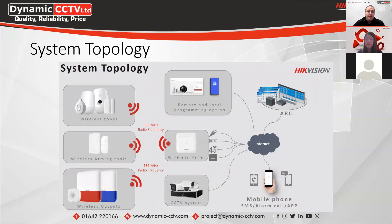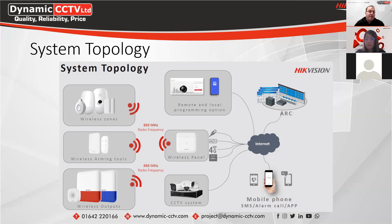As a general overview of the topology with the AX Pro system, you've got your wireless sensors — whether it be door contacts, panic alarms, or PIR sensors. Those all link back to the main hub using radio frequencies, which work on the 868 megahertz range. That's also the same for your wireless arming tools, such as keypads or remote controls with arm and disarm buttons, as well as the sounders — both external and internal — which you can add to your AX Pro hub.